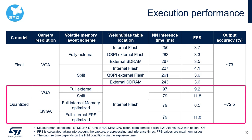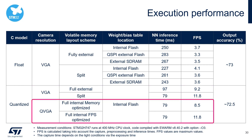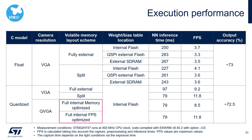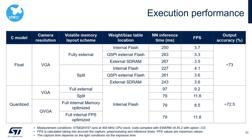For the quantized model, the performance is about two to three times better than the float model. With VGA resolution, same as the float model, the split scheme performs better. With QVGA resolution, as mentioned in Part 3, there are two different optimized schemes. They have the same inference time as the VGA split case, but the FPS-optimized scheme has a greater FPS. Finally, the quantized model has almost the same accuracy as the float model, but much less inference time. In addition, it requires a smaller memory space, which we will discuss in the following slides.